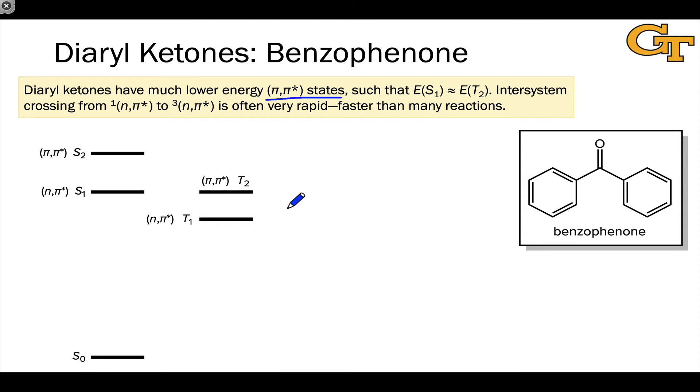And in that case, we get a situation where now the T2 state, the π,π* state, is way lower in energy than it is in the case of the dialkyl ketone. And it can start to approach the energy of the S1 state.